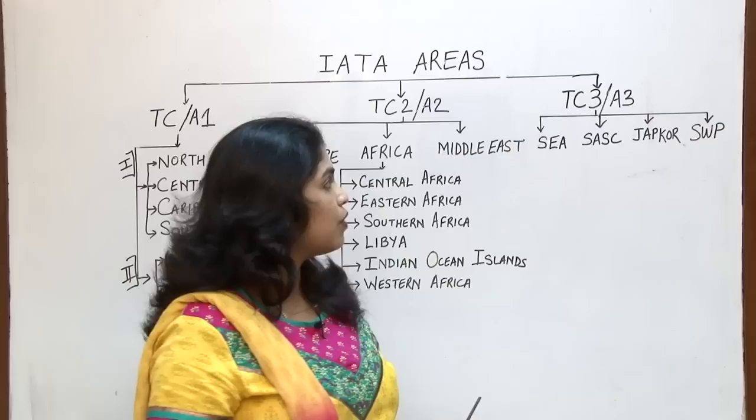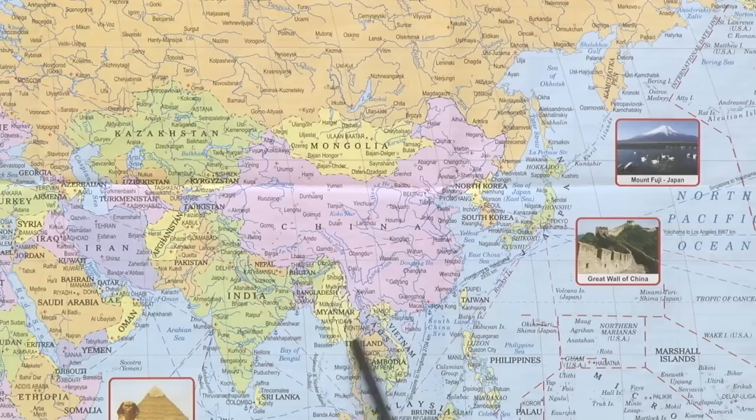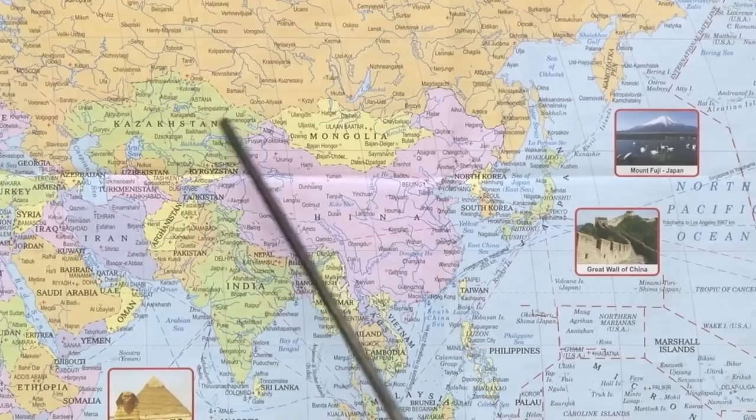Let us go ahead and check the list of countries under the first zone, Southeast Asia. These are the regions under Southeast Asia. Typically, Southeast Asian countries will be here, and some are also in this region — Turkmenistan and Uzbekistan fall under this particular region as well. So this will be Southeast Asia.